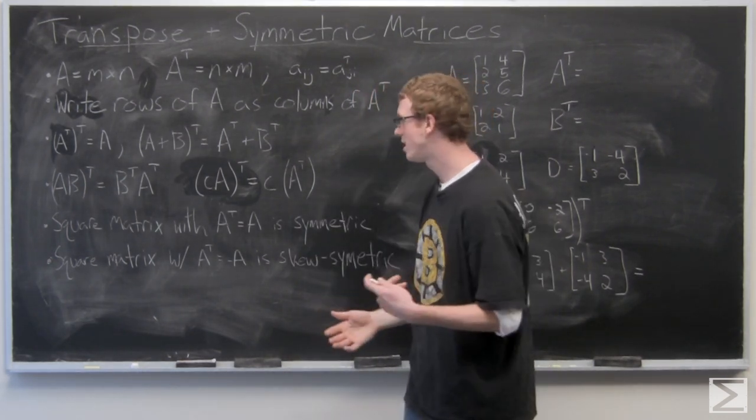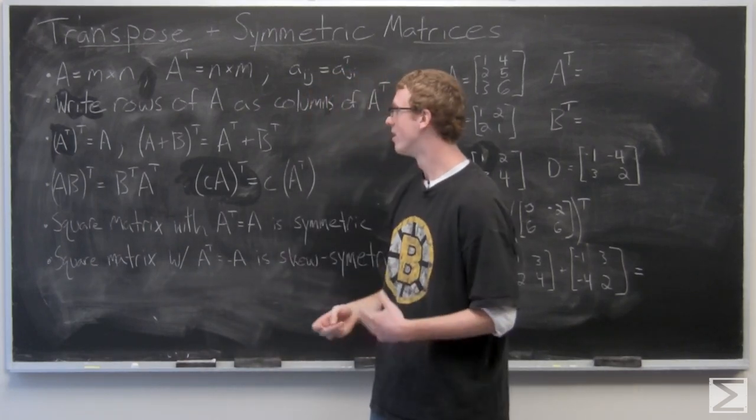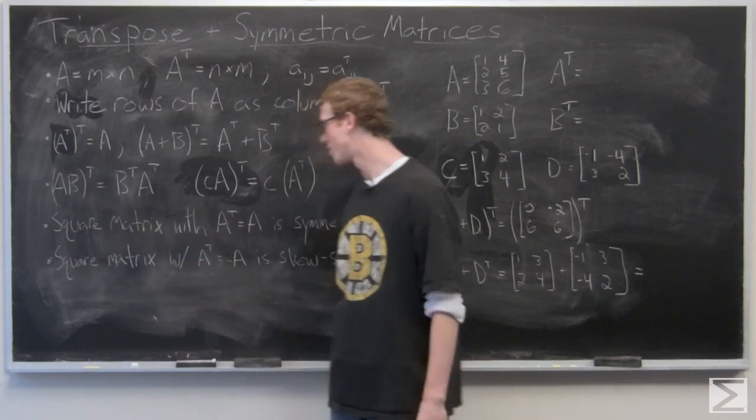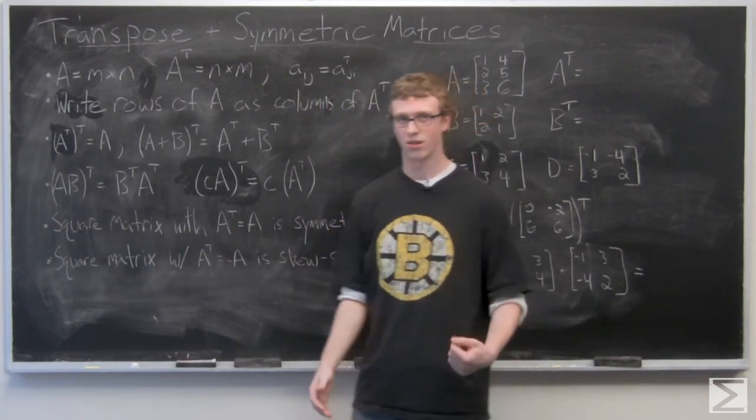And for symmetric matrices, they have to be square matrices otherwise you can't have symmetry. A square matrix with AT equals A is symmetric. We'll take a look at an example of that.